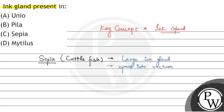What does this ink gland secrete? This ink gland secretes a brown or blackish fluid, which is stored in a reservoir.